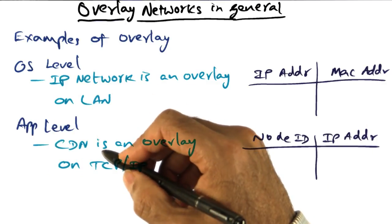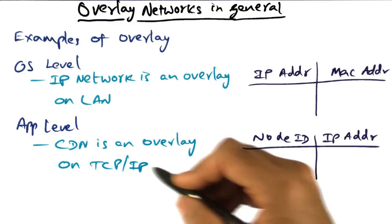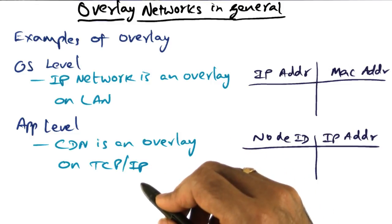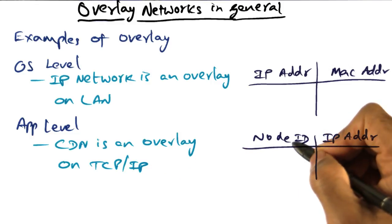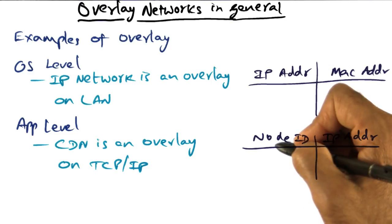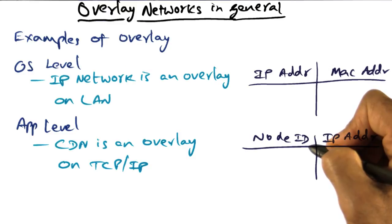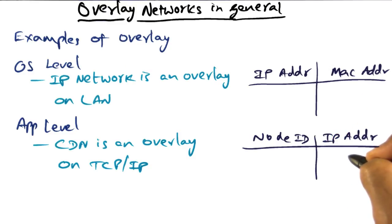Similarly, CDN, a content distribution network, is an overlay on top of TCP IP. So in particular, in the case of CDN, we have this node ID. There is some manufactured ID at the application level, but that maps to an IP address.